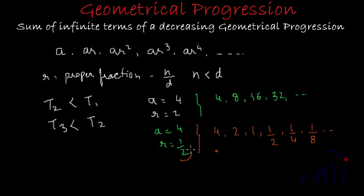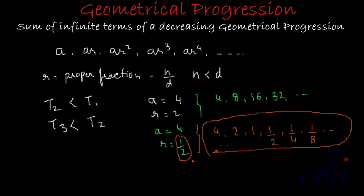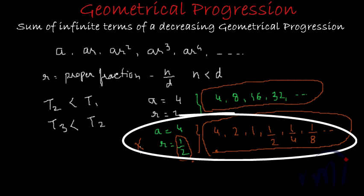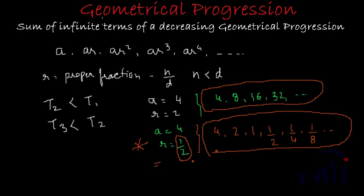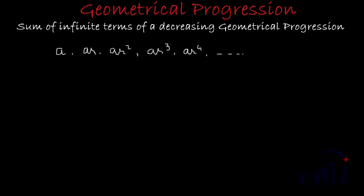When r is a proper fraction, we get a continuously decreasing geometrical progression, while r greater than 1 gives a continuously increasing geometrical progression. In this video, we are going to talk about the decreasing progression and find what happens if we add an infinite number of its terms. Let the sum be S equal to A plus AR plus AR squared plus AR cubed plus AR to the power 4, continuing for infinite terms.